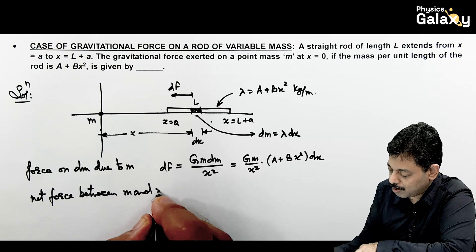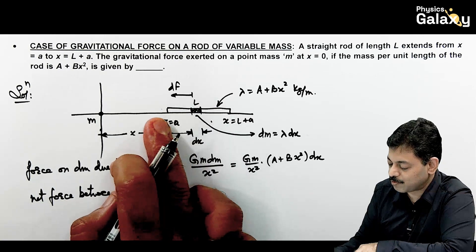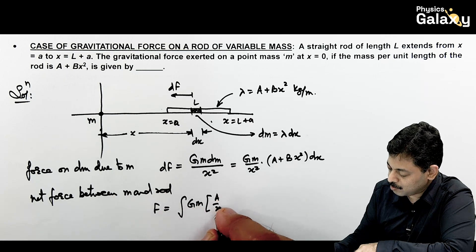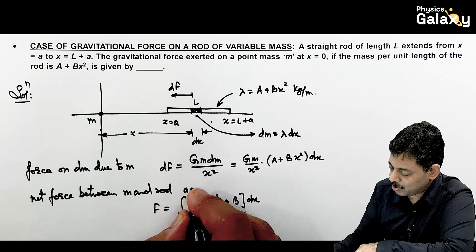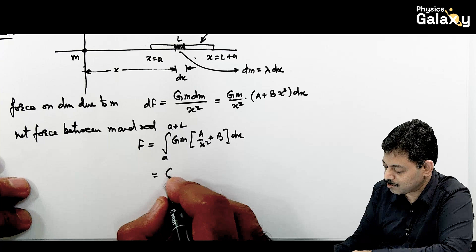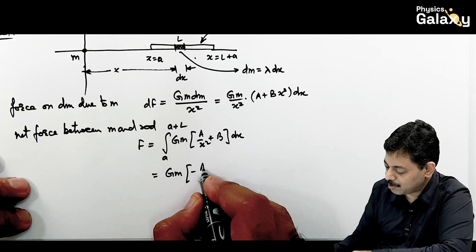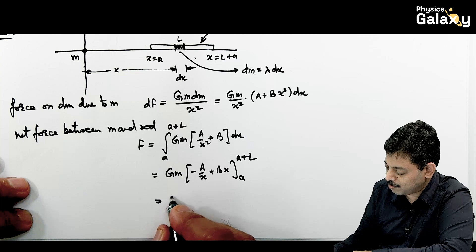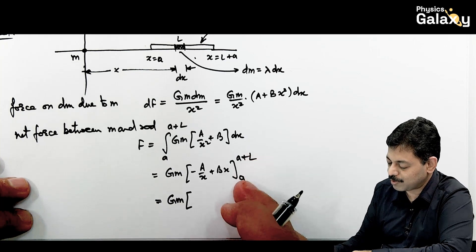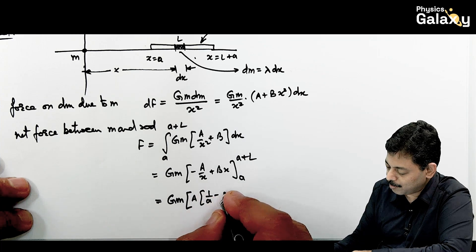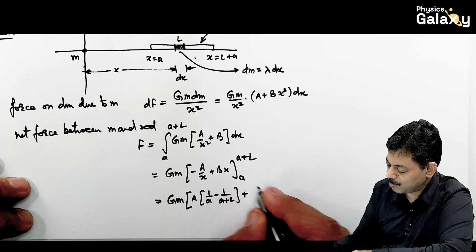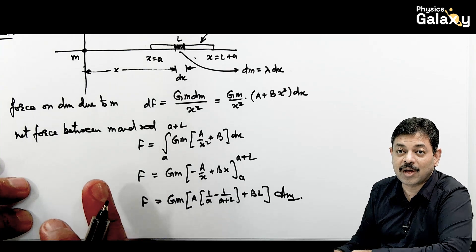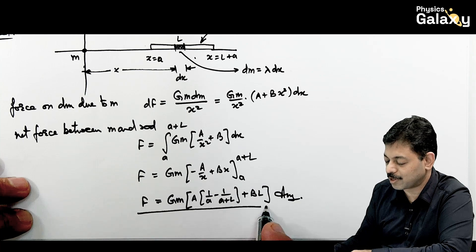The net force F is obtained by integrating dF from x = a to x = a + l: F = ∫Gm(a/x² + b)dx. Integrating gives Gm[−a/x + bx] evaluated from a to a+l. Substituting the limits: F = Gm[a(1/a − 1/(a+l)) + bl]. This is the net gravitational force acting between mass m and the rod.